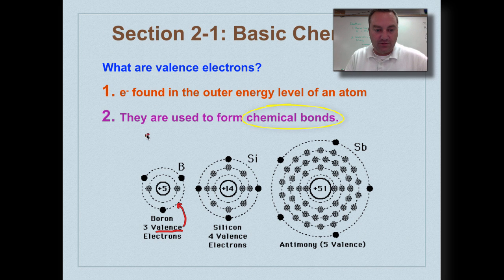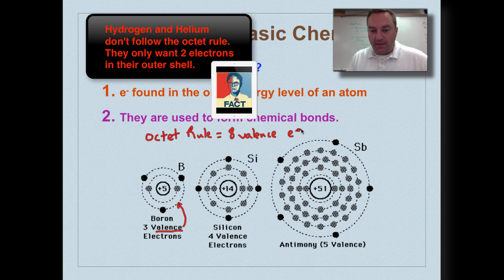Now I want to prime your head for something we're going to come up a little bit later. And this is called the octet rule. Now oct, O-C-T, that deals with eight. And most atoms want to have eight valence electrons.